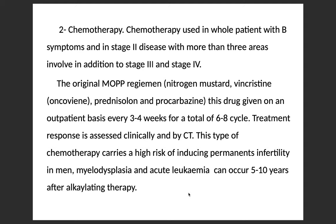Regarding chemotherapy, it is used in patients with B symptoms and in stage 2 disease with more than three areas involved, in addition to stage 3 and stage 4. The original MOPP regimen includes nitrogen mustard, vincristine, prednisolone, and procarbazine. This is given on an outpatient basis every three to four weeks for a total of six to eight cycles. Treatment response is assessed clinically and by CT scan. This chemotherapy carries a high risk of inducing permanent infertility in men, in addition to myelodysplasia and acute leukemia, which can occur even five to ten years after receiving this therapy.